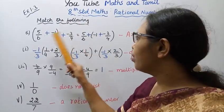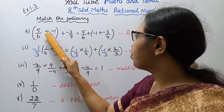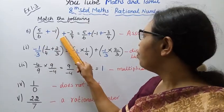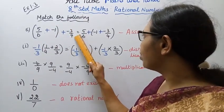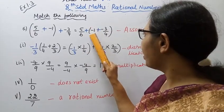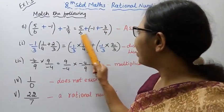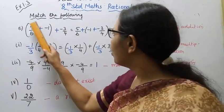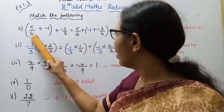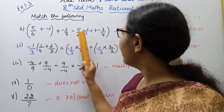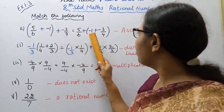Match the following. First: 5 by 6 plus minus 1 bracket plus minus 3 by 4 equals 5 by 6 plus minus 1 plus minus 3 by 4.